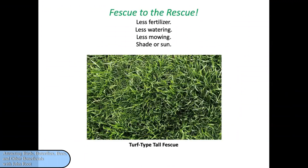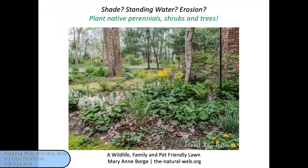You might consider, for the areas you do want to preserve as lawn, a grass called turf-type tall fescue. The roots can get as deep as four feet, which means you may not need to water it at all, and it needs less fertilizer and less mowing. It can be grown in shade or sun and it looks almost identical to Kentucky bluegrass. If you have problems establishing a lawn — if there's too much shade, standing water, or erosion — why not plant native perennials, shrubs, and trees that know exactly how to handle situations like this? I invite you to visit Mary Ann Borge's website, TheNaturalWeb.org — her articles are very informative, easy to read, and her photography is absolutely stunning.